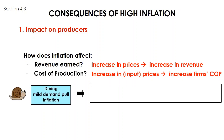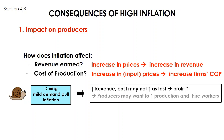In the usual case where the economy faces mild demand-pull inflation, firms' revenue probably increases faster than costs. This is because firms often have contractual agreements with suppliers at pre-agreed cost prices, so cost increases tend to rise more slowly over time. This allows producers to still increase production to meet growing aggregate demand, remaining profitable and continuing to hire labour.